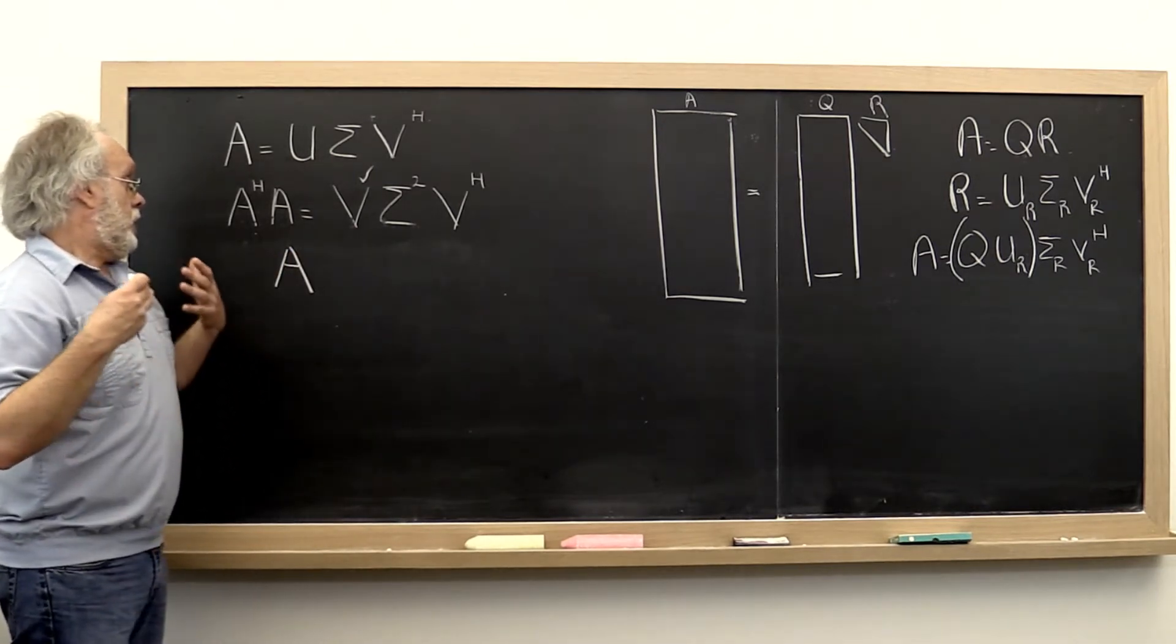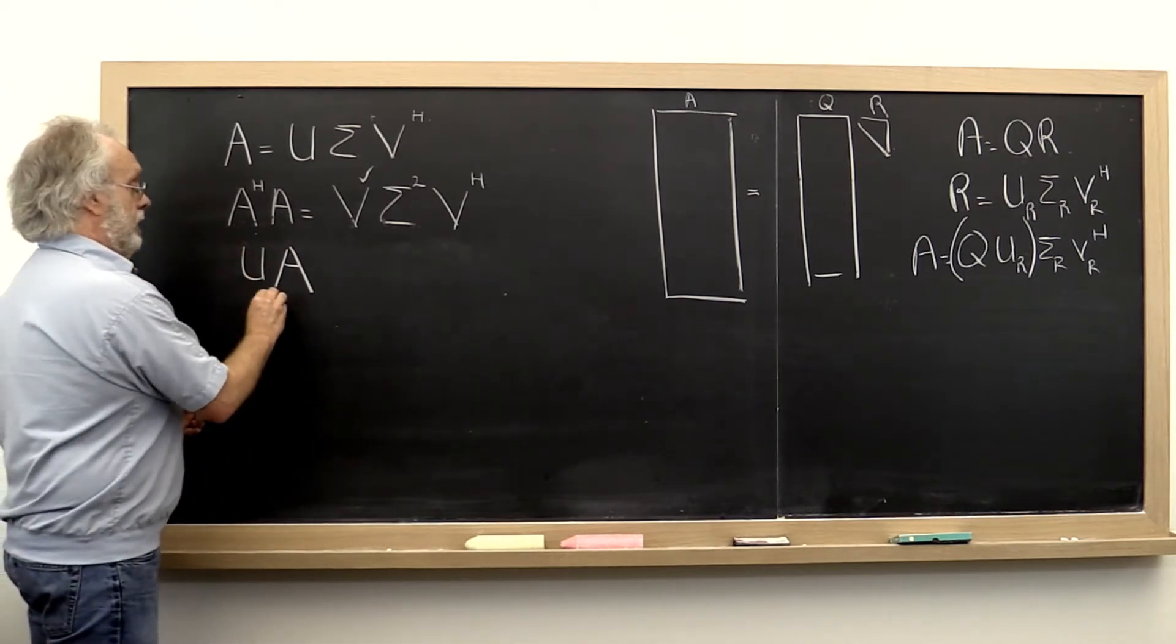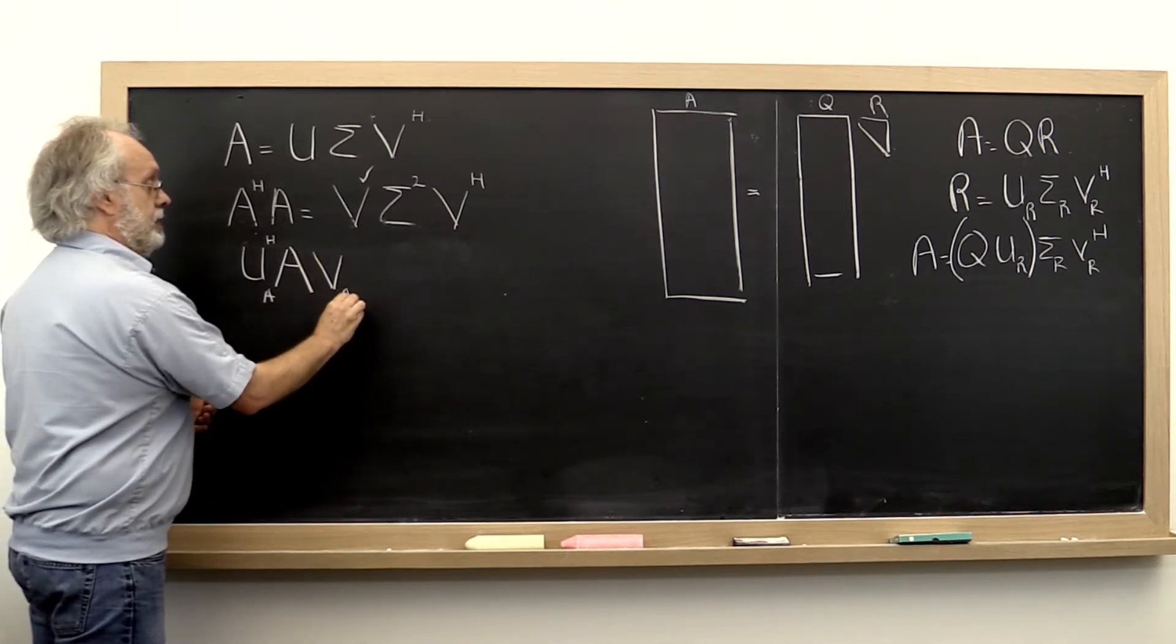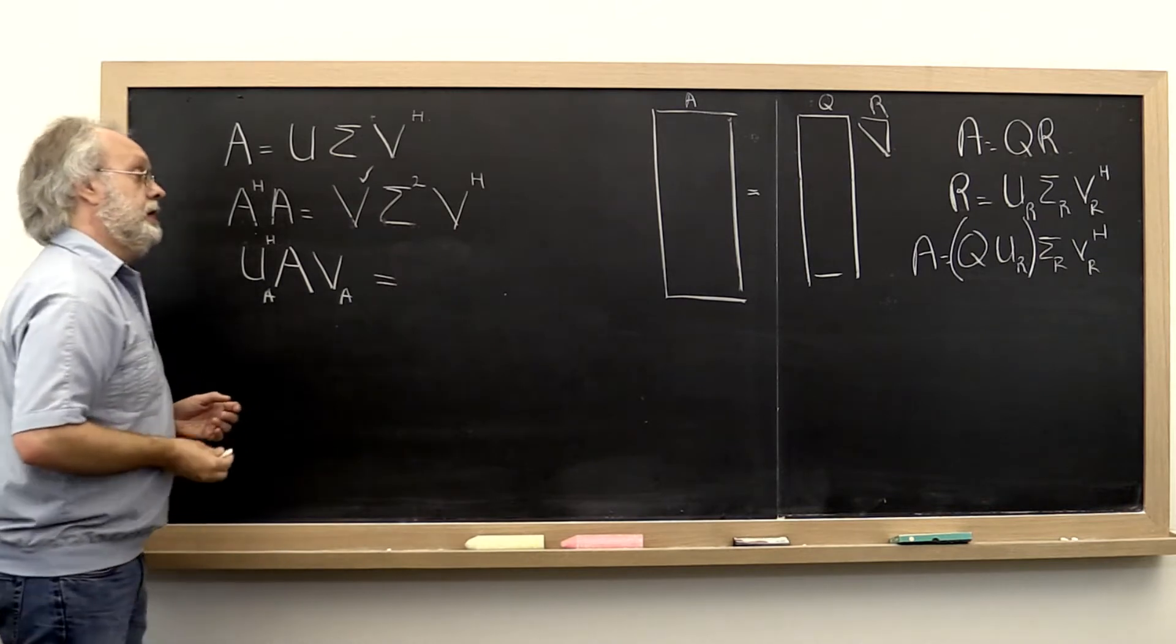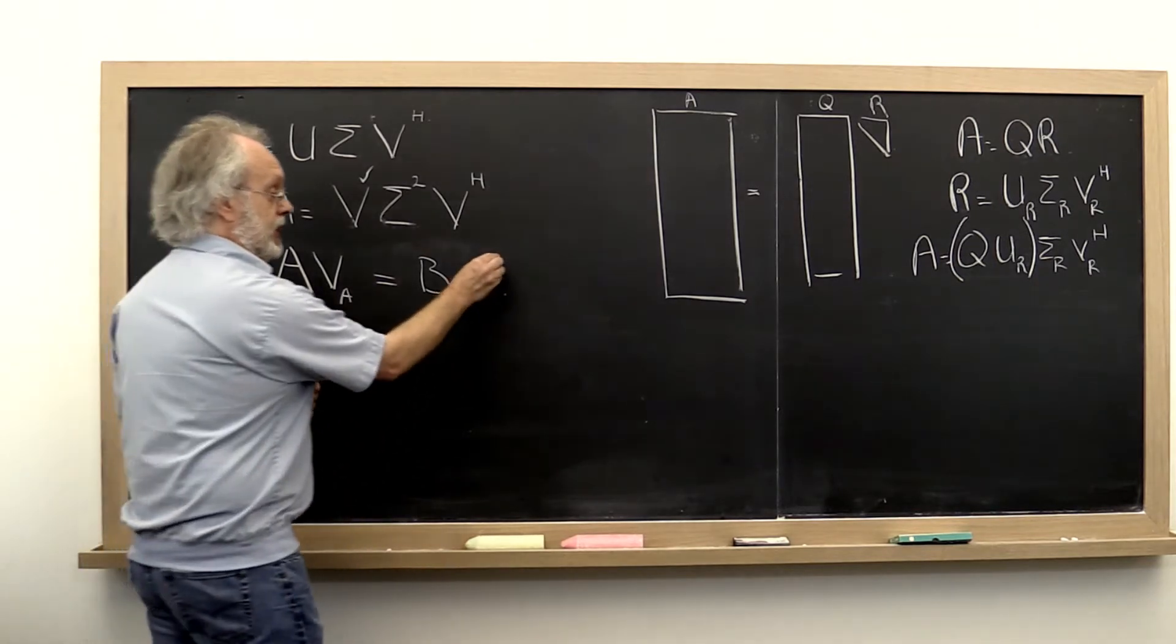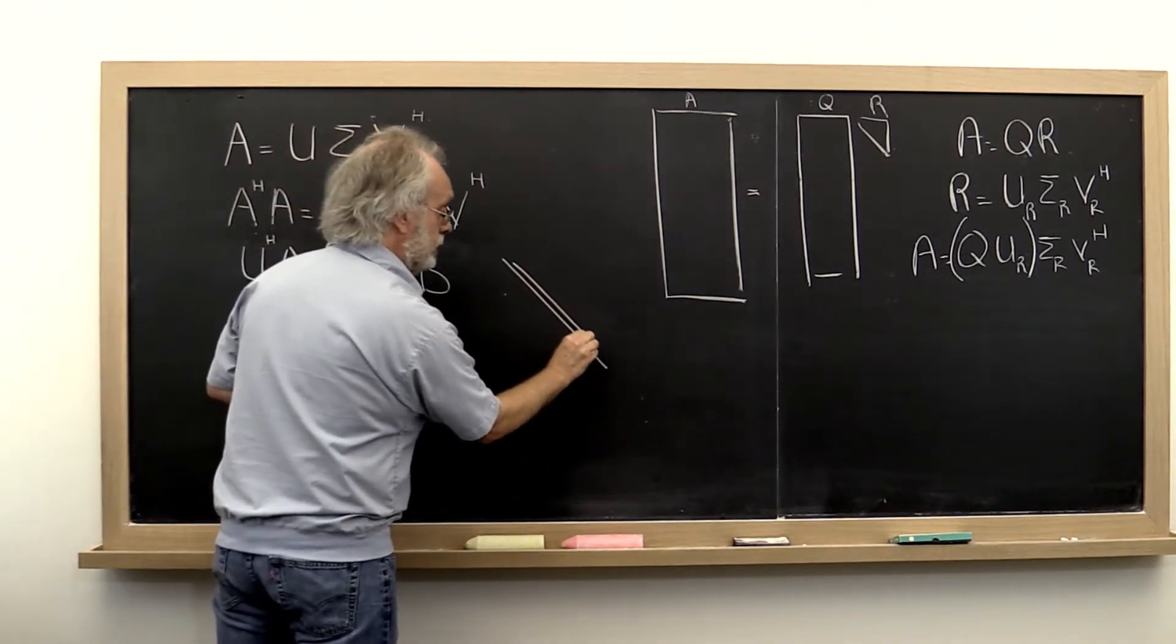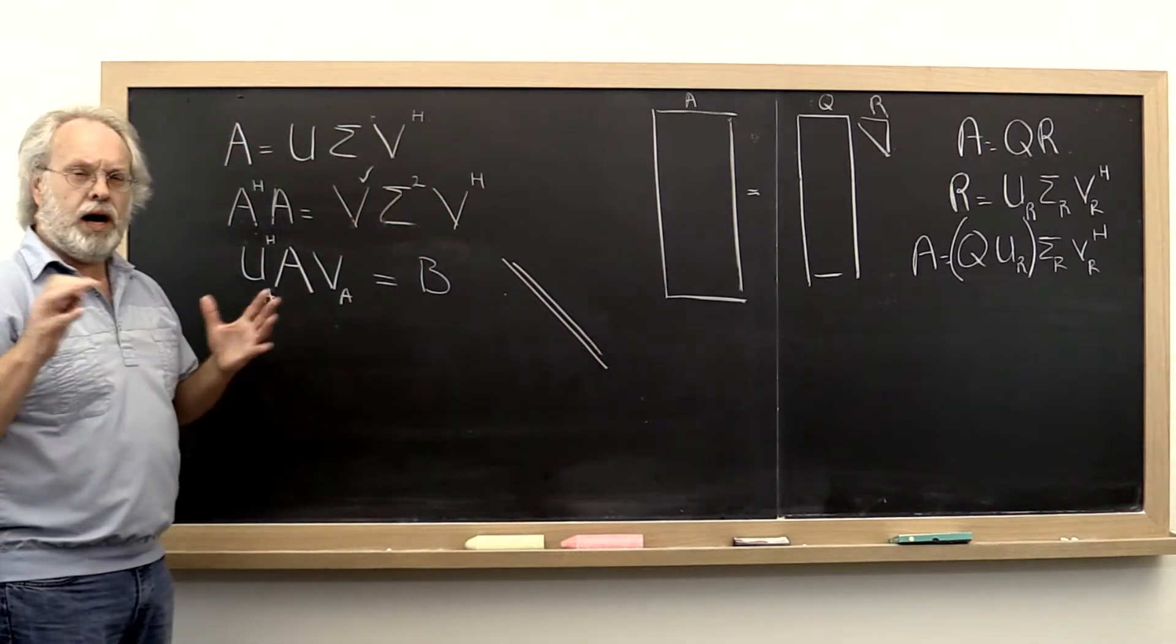Now what do we mean by bidiagonal? This matrix has a diagonal and one super diagonal. Now why is that important?